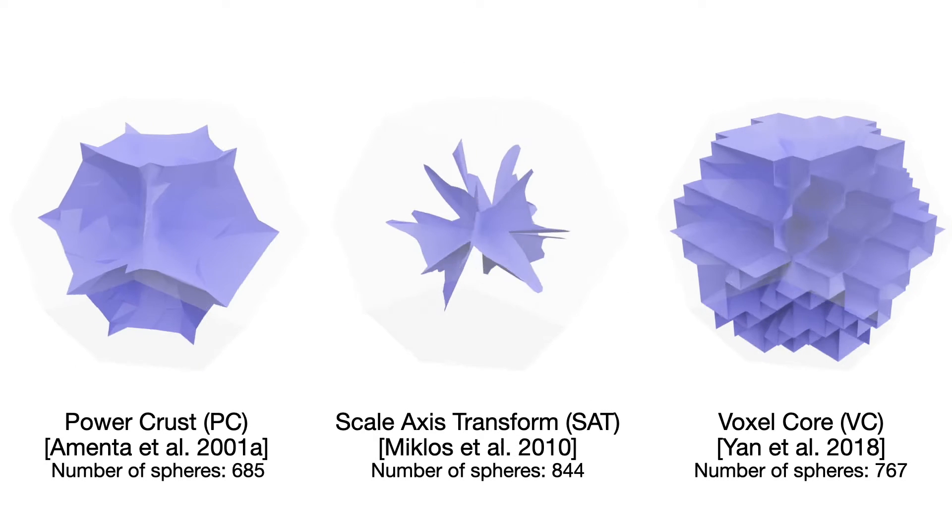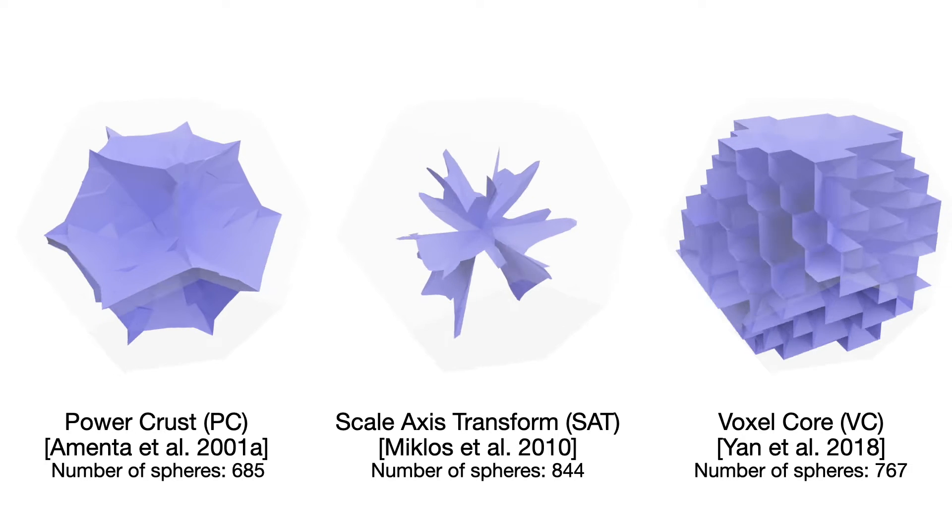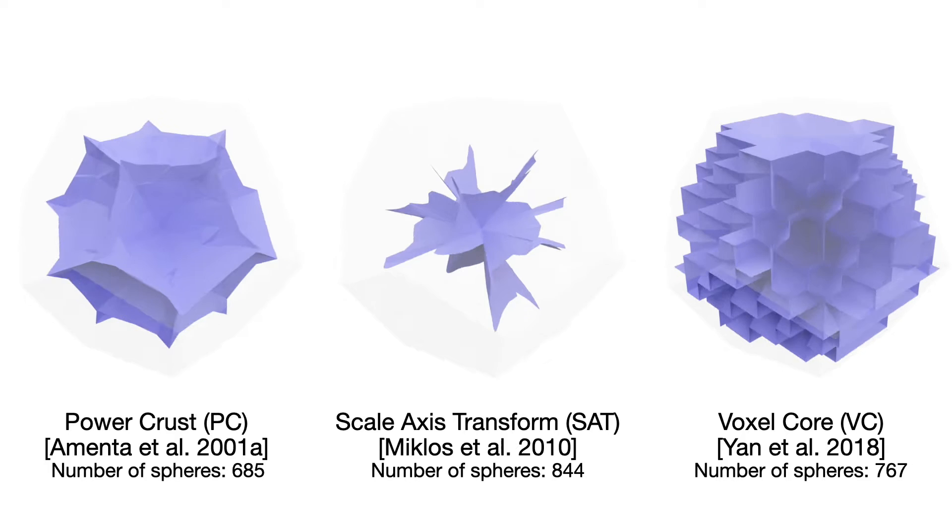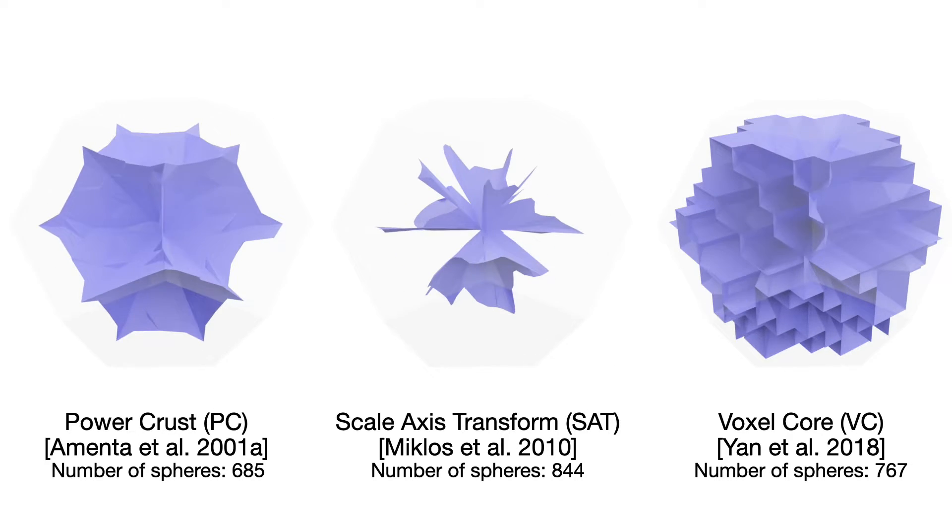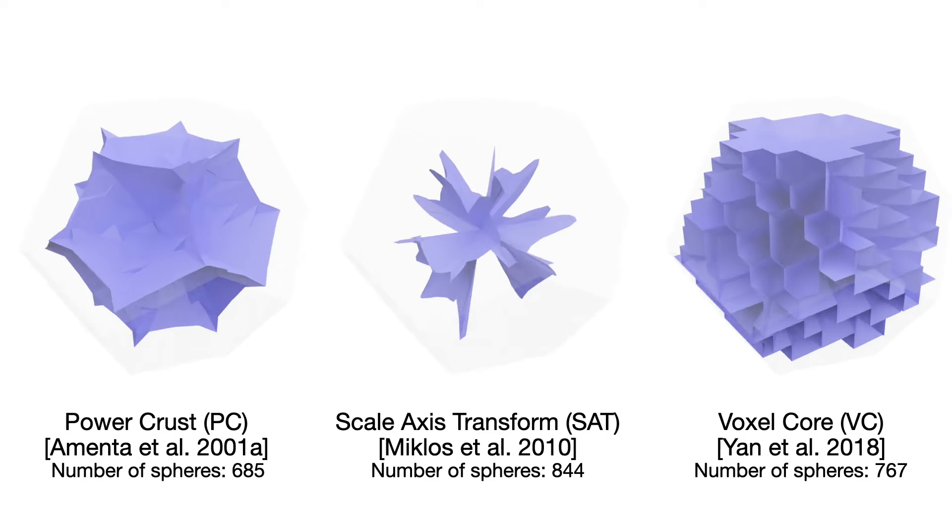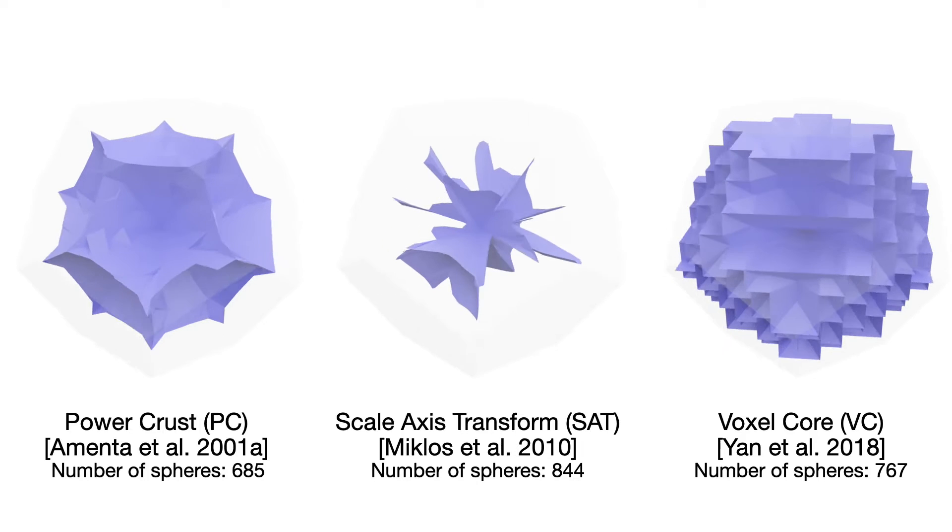However, all existing methods fail to preserve external features. Internal features are even more difficult to capture since they are hidden information of the input shape. Existing solutions tend to increase surface sampling rate or decrease voxel size globally in order to maintain the internal features.